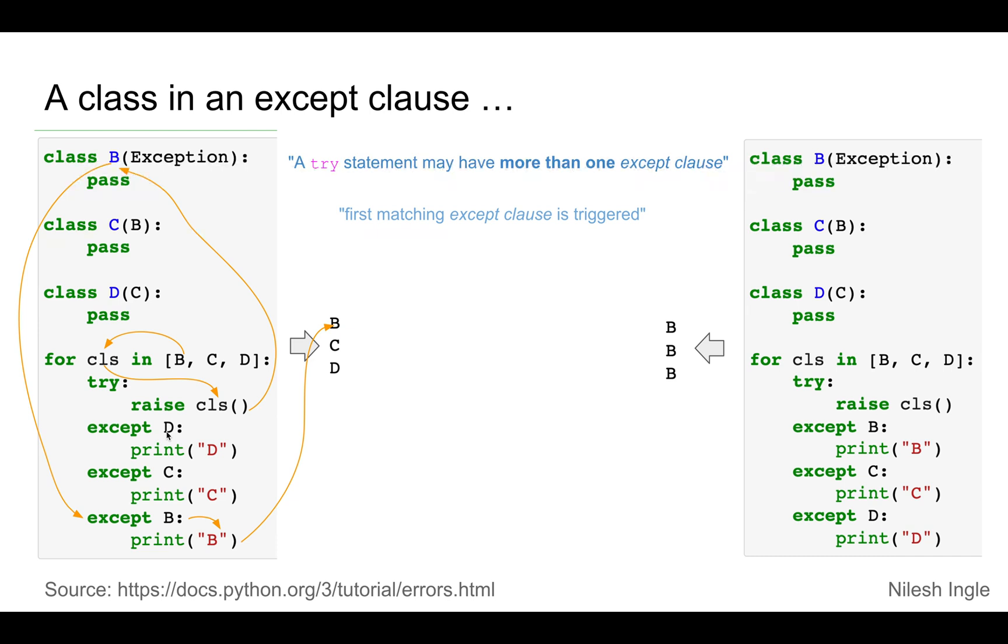In the second iteration, we get the error C. And again, we raise C inside of the try block. And we exit out of the try block, look at the first except block, except clause.